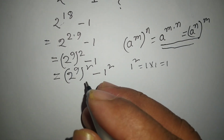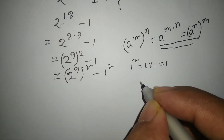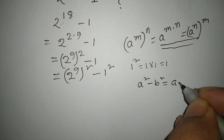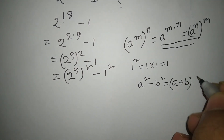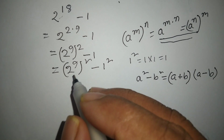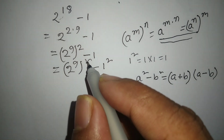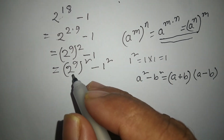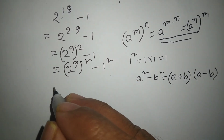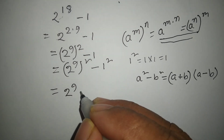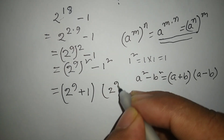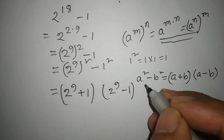Now we will apply another formula. This formula is a square minus b square equals a plus b into a minus b. Here, 2 to the power 9 whole square minus 1 square: this part is a and this part is b. So we can write 2 to the power 9 plus 1, into 2 to the power 9 minus 1, by applying this formula.